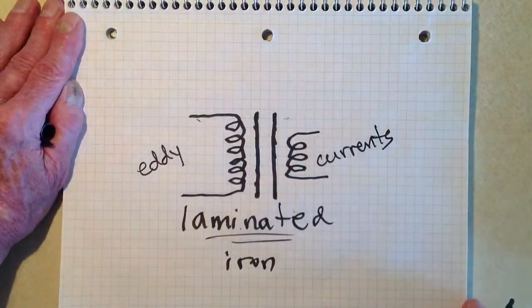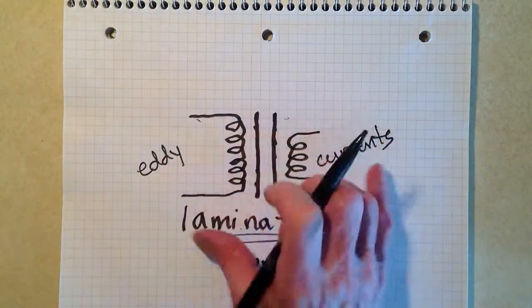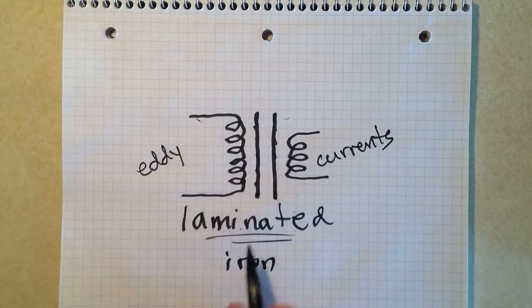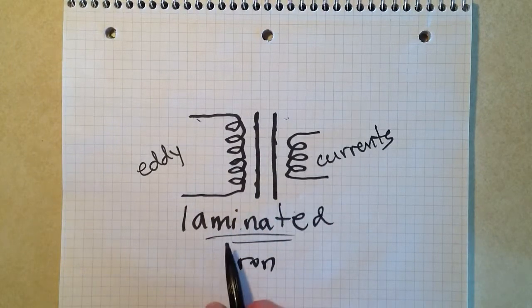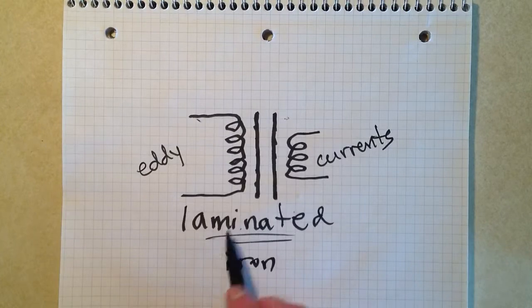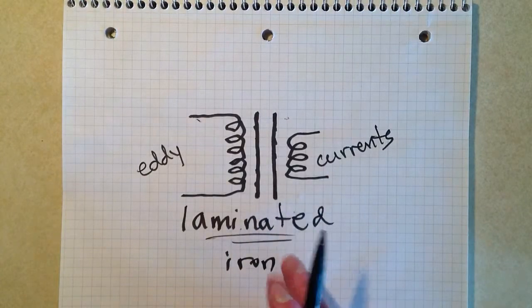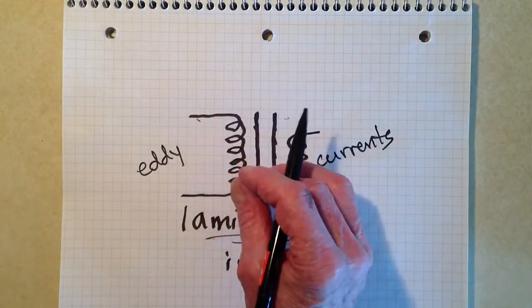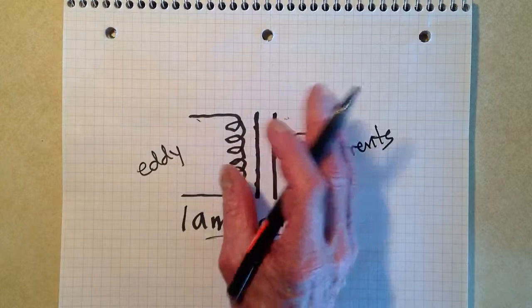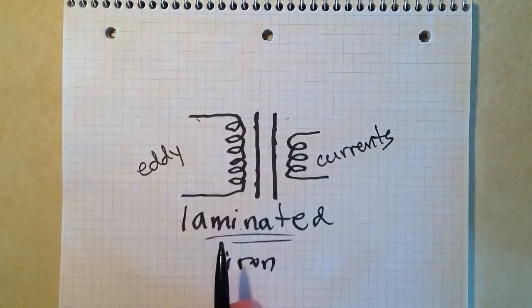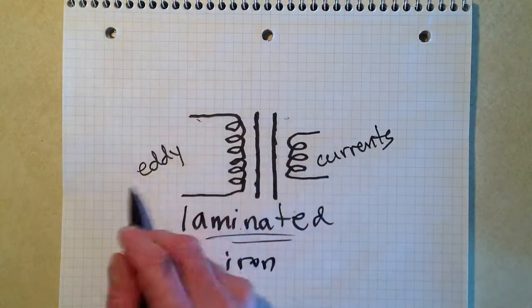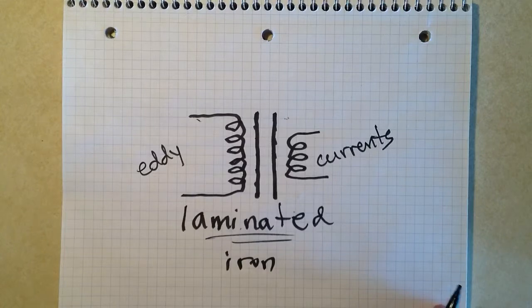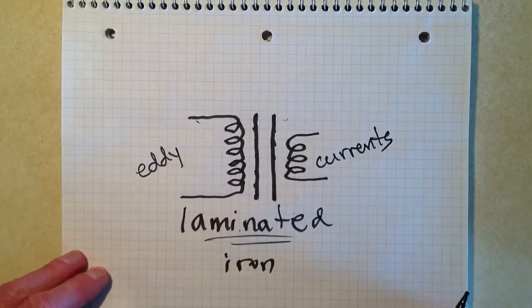Which would otherwise occur in this kind of a core, or a solid iron core, where you get circulating currents in the core, and it heats the core material up, and that produces loss and reduces the efficiency of the transformer. If you laminate a bunch of slabs together, glue them so that the currents can't actually flow between them, that is to say, the glue does not conduct, then you get lots less eddy currents. It tends to choke off those eddy currents. So those are just a few little tutorial remarks.